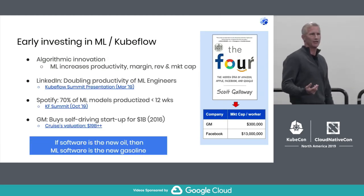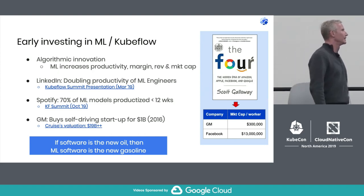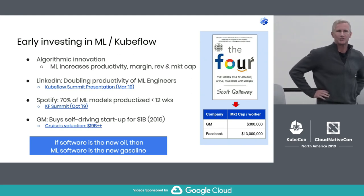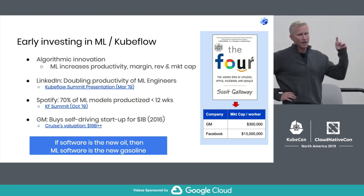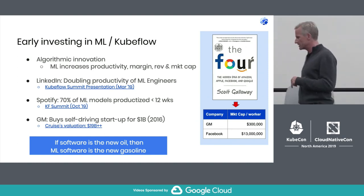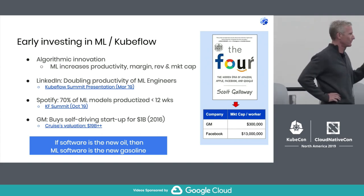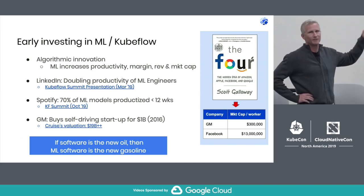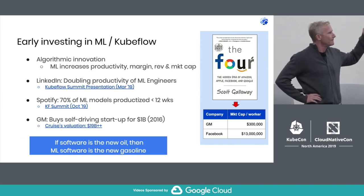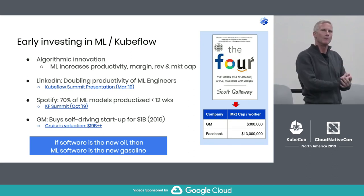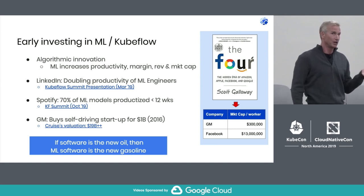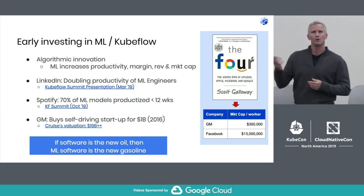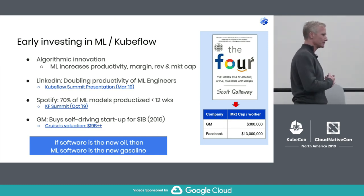Another interesting piece of having a community is looking at early investors into ML and Kubeflow, and how algorithmic innovation has changed so many businesses. This book, "The Four," is one I got from my daughter's education at SMU. One of the statistics was comparing the market cap per employee of General Motors to Facebook. General Motors has a market cap of $300,000 per employee, but Facebook's is almost 40 times more at $12 million per employee.